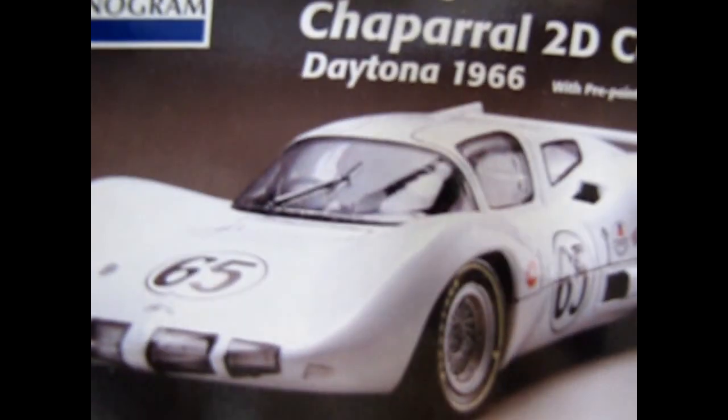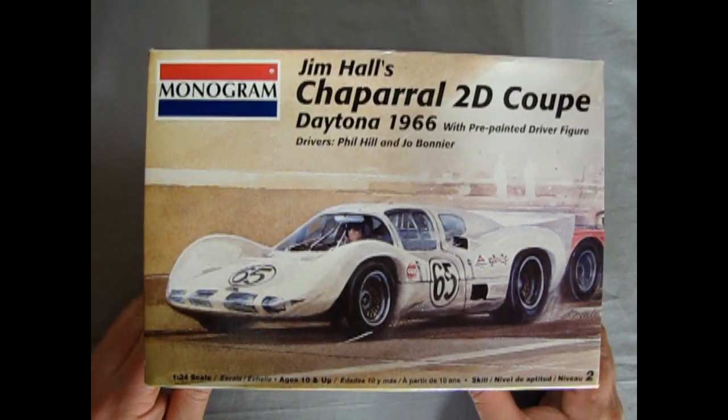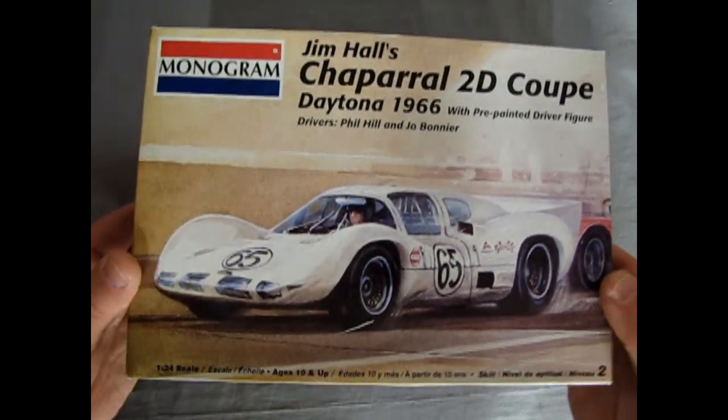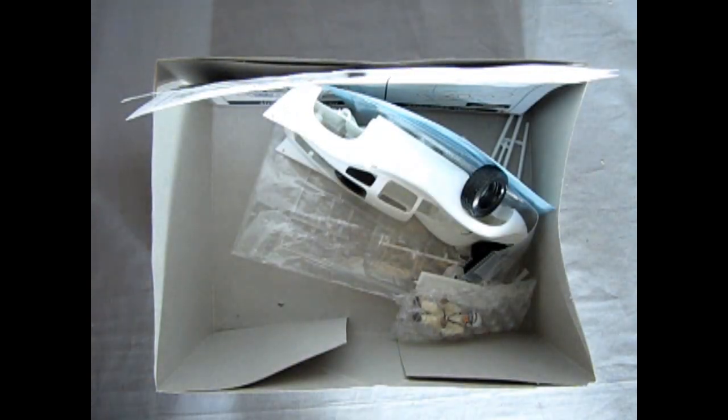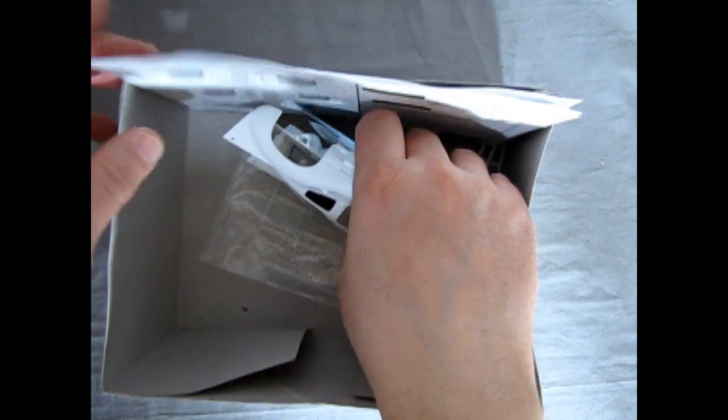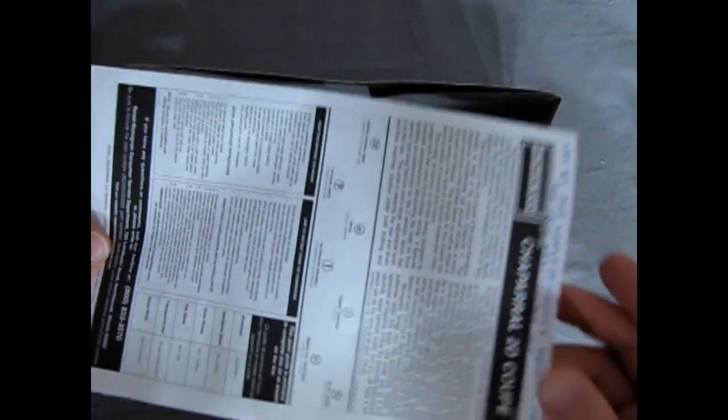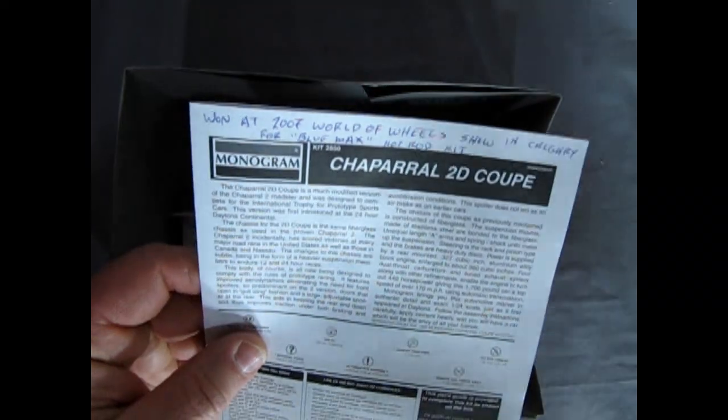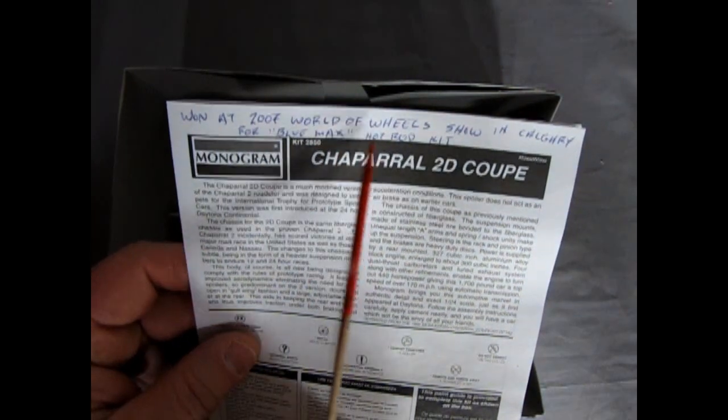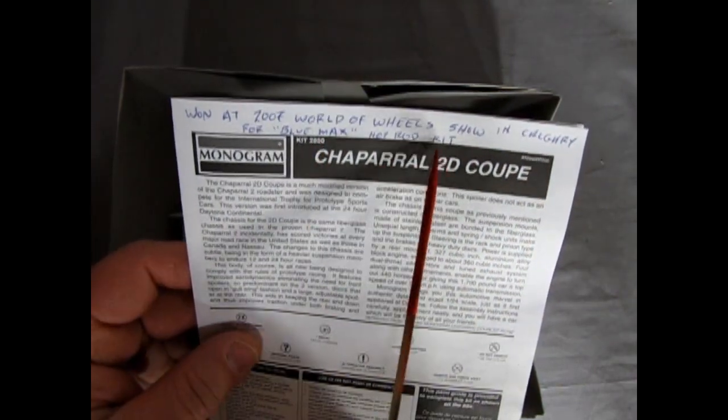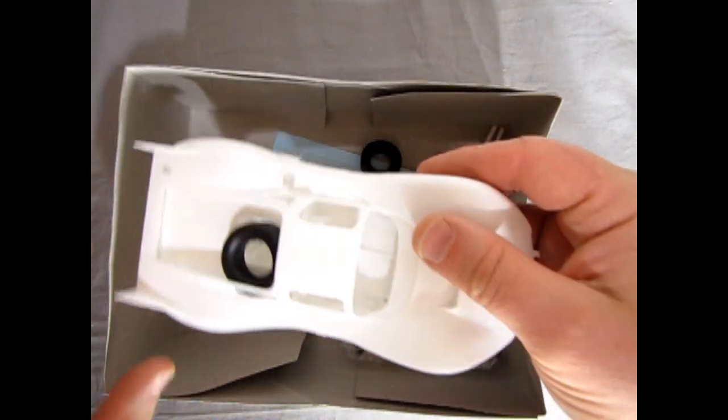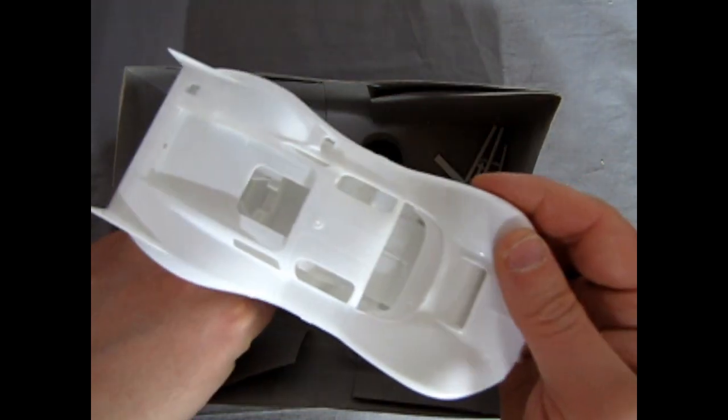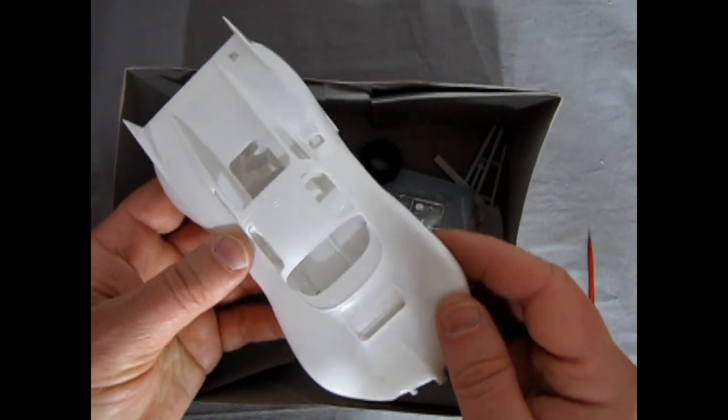All right, I'll just turn this over again so we get back to our lid. And now let's just take the lid off and see what we get presented with with the parts here. Well, because I tipped it around everything stood on end. Anyway, you get this nice instruction sheet and look what it says here. One at the 2007 World of Wales Show and Shine in Calgary for my Bluemax Hot Rod Kit. So really cool.